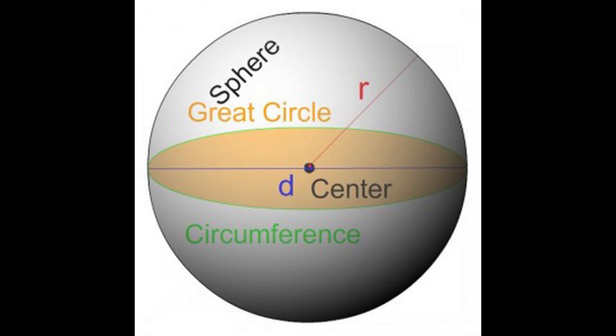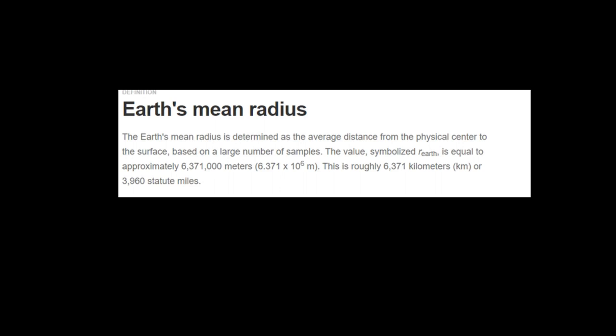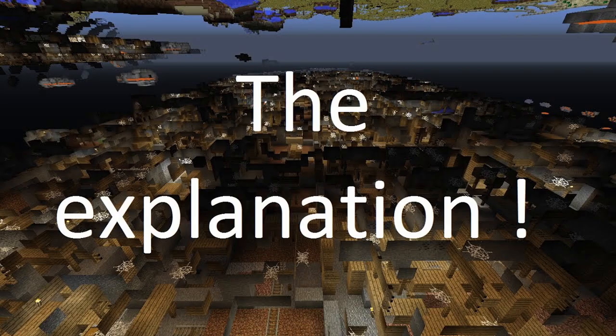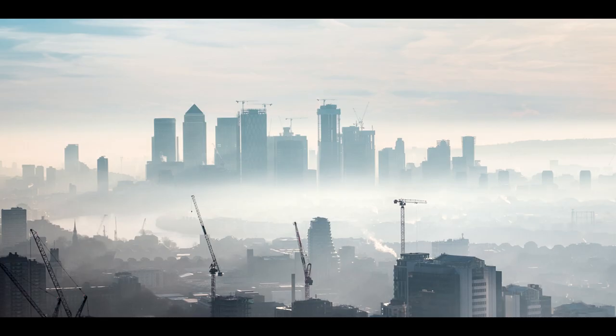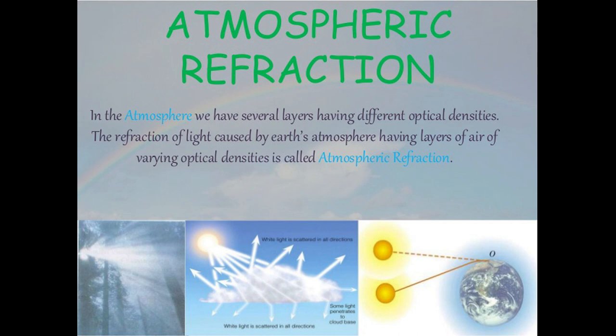However, they are all larger than the generally accepted radius of the earth of 6,371 kilometers. The deviation is around 9 to 13% and this requires an explanation. We must remember that the measurements are a result of observations in real life. These observations are subject to visual limitations of which atmospheric refraction is the most important one.